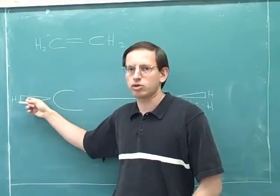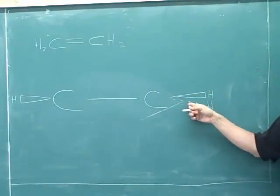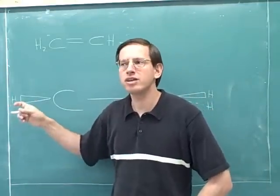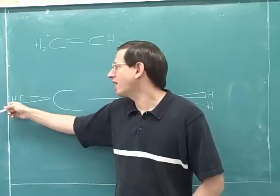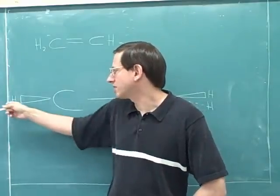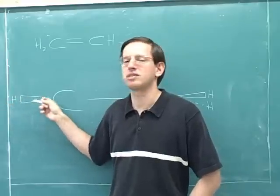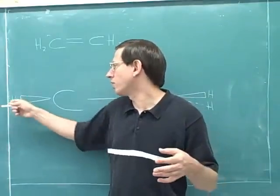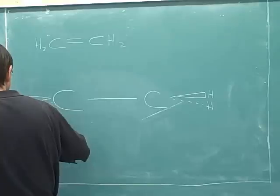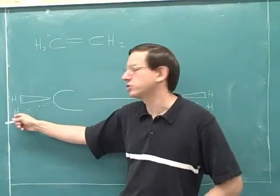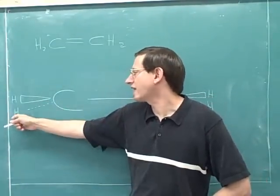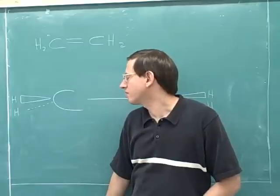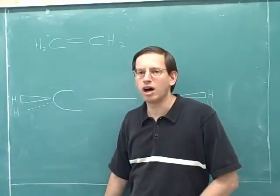Remember that a wedge means a bond coming towards you out of the page, and a dash means a bond going away from you into the page. If I was going to be realistic, I would only show the hydrogen that's coming towards you. There is another hydrogen, but in real life you wouldn't be able to see it because it's directly behind this hydrogen. The second hydrogen on this carbon is directly behind this hydrogen. So if we were being realistic, you wouldn't actually be able to see that hydrogen.